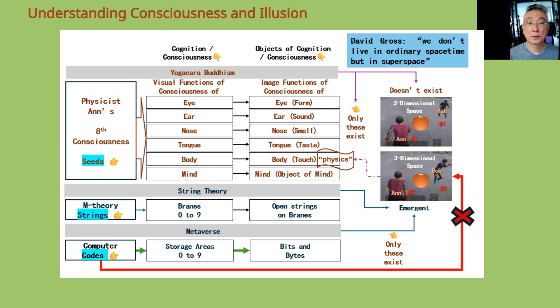The metaverse can only interact with the apple through the green lines which are in the storage spaces, which are in bits and bytes. Similarly, everything in string theory happens in branes and open strings on branes, with M-theory as an anchor like a computer.